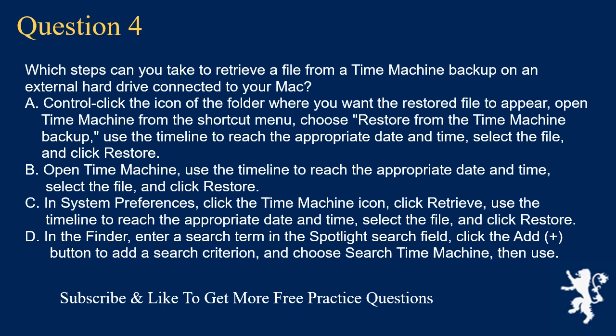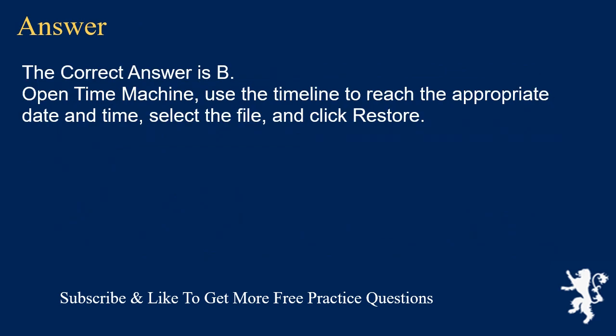Question 4. Which steps can you take to retrieve a file from a Time Machine backup on an external hard drive connected to your Mac? A. Control-click the icon of the folder where you want the restored file to appear, open Time Machine from the shortcut menu, choose Restore from the Time Machine backup, use the timeline to reach the appropriate date and time, select the file and click Restore. B. Open Time Machine, use the timeline to reach the appropriate date and time, select the file and click Restore. C. In System Preferences, click the Time Machine icon, click Retrieve, use the timeline, select the file and click Restore. D. In the Finder, enter a search term in the Spotlight Search field, click the Add button to add a search criterion, and choose Search Time Machine. The correct answer is B: Open Time Machine, use the timeline to reach the appropriate date and time, select the file and click Restore.